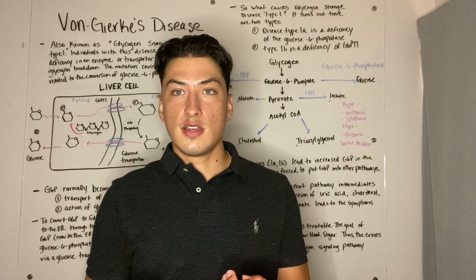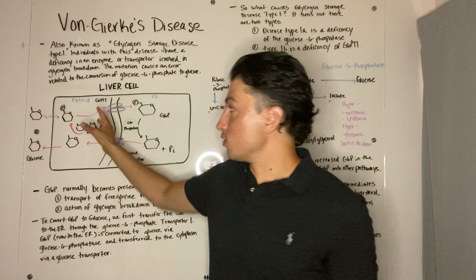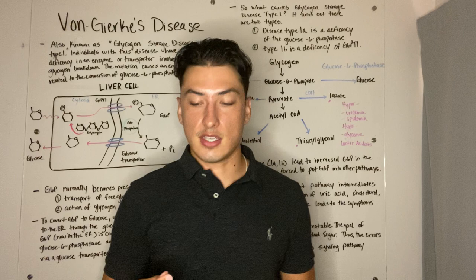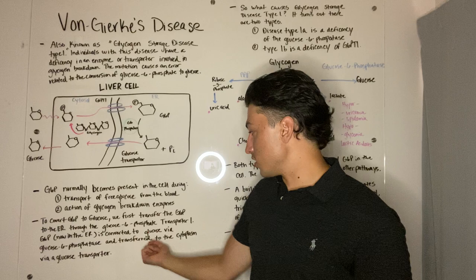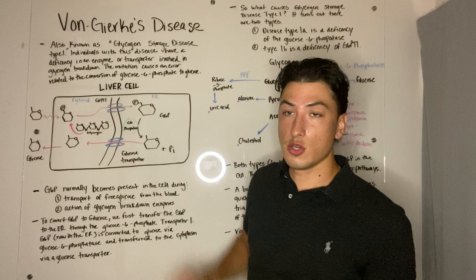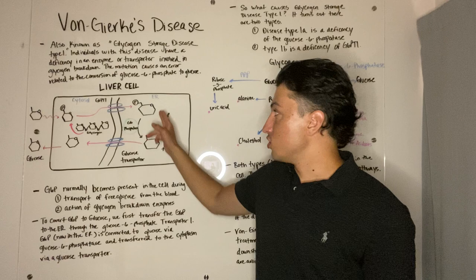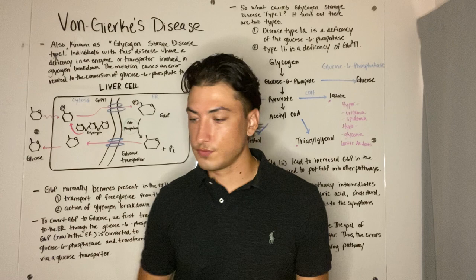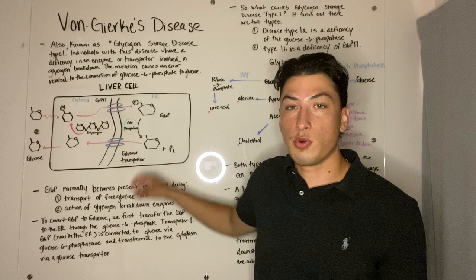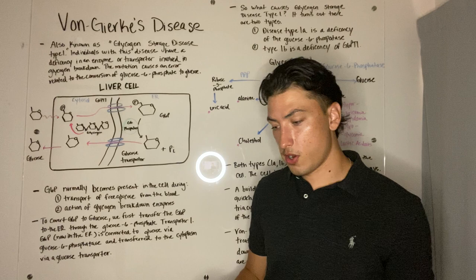The problem is that during glucagon signaling, we can't simply convert glucose 6-phosphate to glucose inside the cytosol. We must first transfer it inside the endoplasmic reticulum, which we can do through the action of the glucose 6-phosphate transporter 1. Once the glucose 6-phosphate is inside of the ER, we can use glucose 6-phosphatase to convert our glucose 6-phosphate into glucose and an inorganic phosphate. This process occurring in the ER then transports our glucose molecule into the cytosol via the glucose transporter.